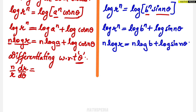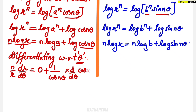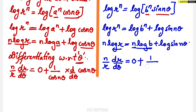Since n and a are both constants, n log a differentiates to 0. Now for log cos(nθ): differentiation gives 1/cos(nθ), but cos(nθ) must also be differentiated with respect to θ. For the second equation similarly: (n/r)(dr/dθ) equals 0 (since b and n are constants) plus the differentiation of log sin(nθ), which gives 1/sin(nθ) times the derivative of sin(nθ) with respect to θ.